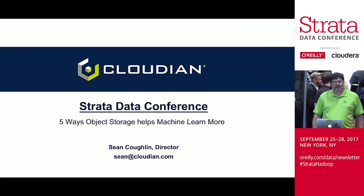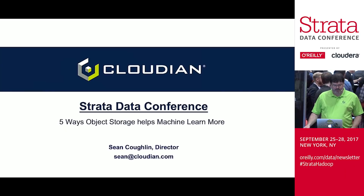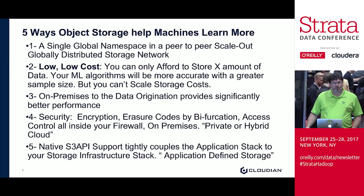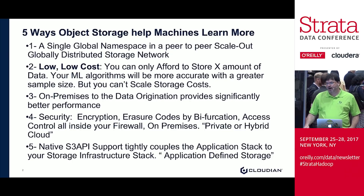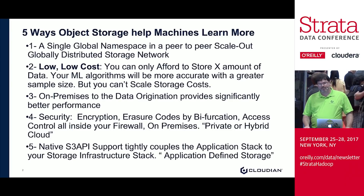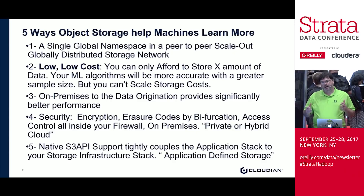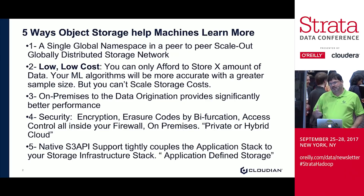I'm Sean Coughlin with Cloudian, and I was asked to address the audience today in regards to five ways that object storage can help machine learning. I'm going to run through a few ways and then talk a bit more about each one. First and foremost, object storage and Cloudian provides a single global namespace in a peer-to-peer network that's globally distributed. We also provide an extremely low-cost platform. Your machine learning algorithms are only going to be as good as the amount of data that you actually store against those algorithms.